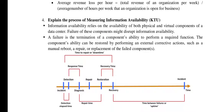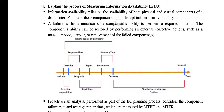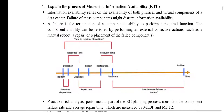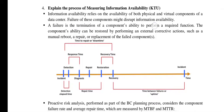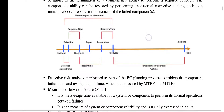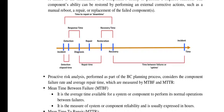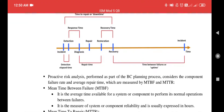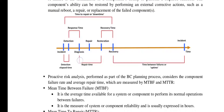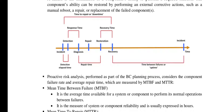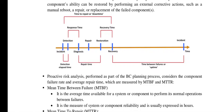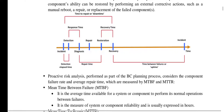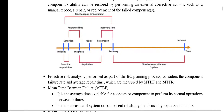Information availability relies on the availability of both physical and virtual components of a data center. Failures of these components result in information unavailability. A timeline diagram shows an incident of unavailability happening, which is then detected. The time from detection to diagnosis is the response time. The system then undergoes repair, restoration, and recovery. The total time from the incident to recovery is called the time to repair, or downtime.